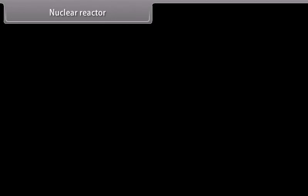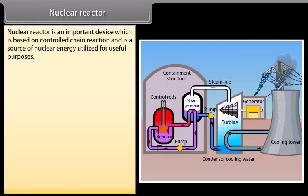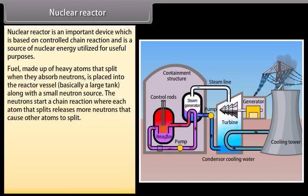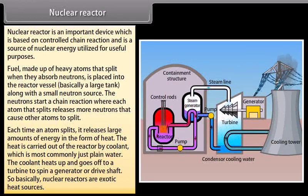Nuclear reactor. Nuclear reactor is an important device which is based on controlled chain reaction and is a source of nuclear energy utilized for useful purposes. Fuel made up of heavy atoms that split when they absorb neutrons is placed into the reactor vessel, basically a large tank, along with a small neutron source. The neutrons start a chain reaction where each atom that splits releases more neutrons that cause other atoms to split. Each time an atom splits, it releases large amount of energy in the form of heat. The heat is carried out of the reactor by coolant, which is most commonly just plain water. The coolant heats up...